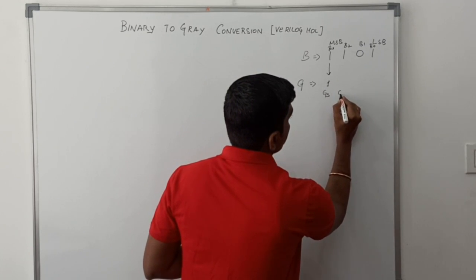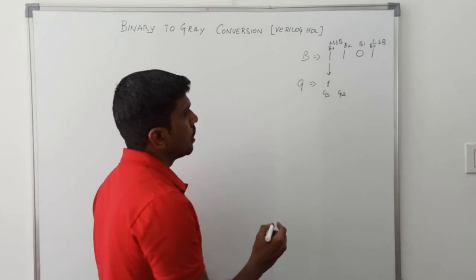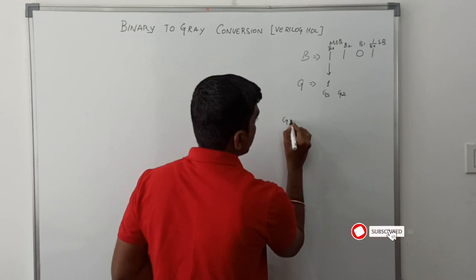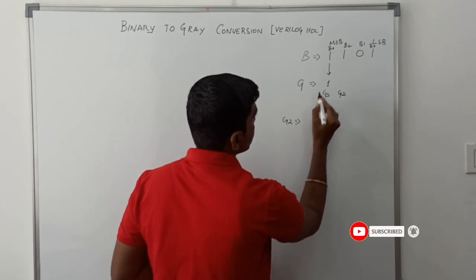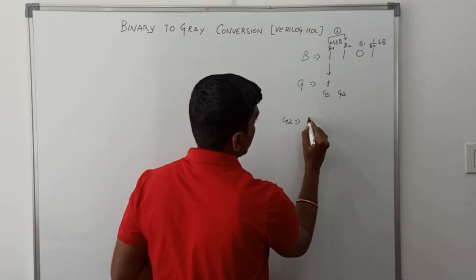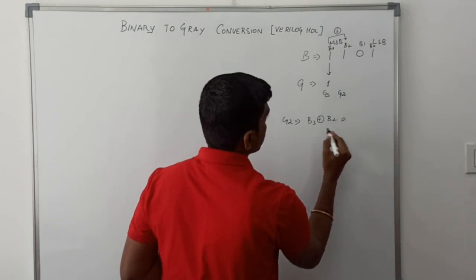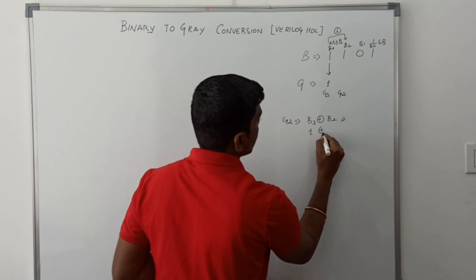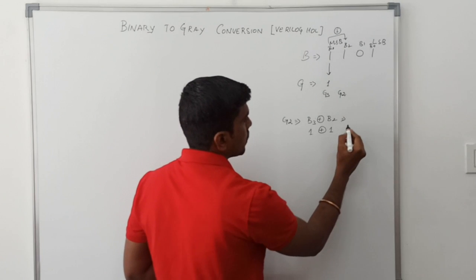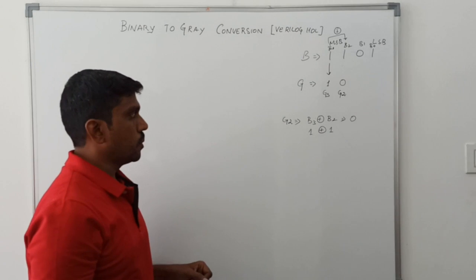Suppose we want to find G2, the gray code second bit value. G2 is equal to B3 XOR B2. So B3 value is 1 XOR with B2 value 1. Since both values are the same, the result is 0.